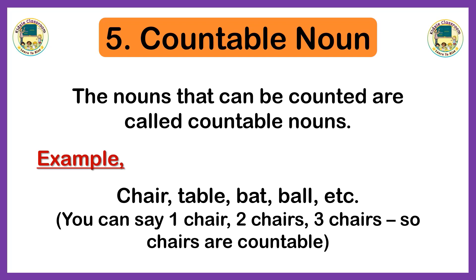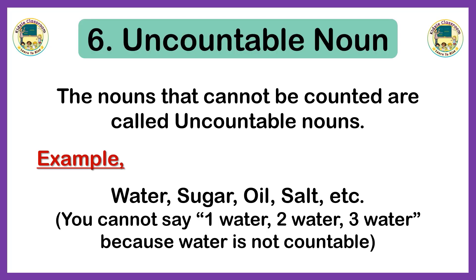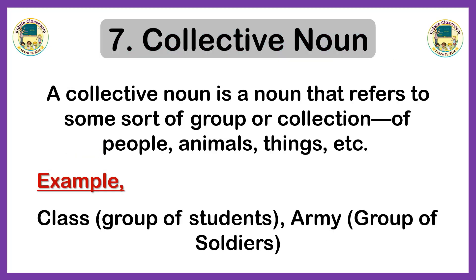Next is the countable noun. Nouns that can be counted are called countable nouns. For example, chair, table, bat, and ball. You can say one chair, two chairs, three chairs — chairs are countable nouns. Next is the uncountable noun. Nouns that cannot be counted are called uncountable nouns. For example, water, sugar, oil, and salt. You cannot say one water, two water, or three water, because water is not countable.